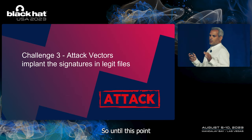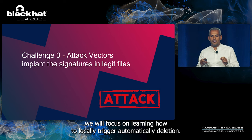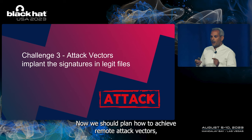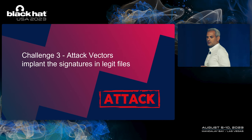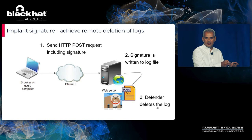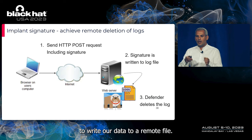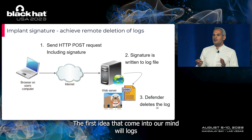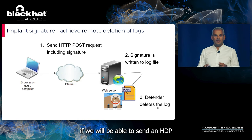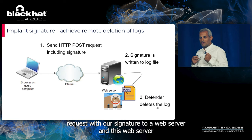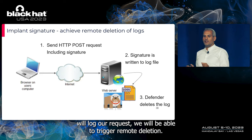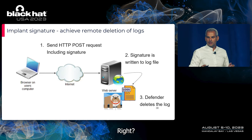Up to this point we focused on learning how to locally trigger automatic deletion. Now we needed to plan remote attack vectors. We need a way to make a privileged service write our data to a remote file. The first idea that came to mind was logs: if we can send an HTTP request containing our signature to a web server, and the web server logs our request, we would be able to trigger remote deletion of the Defender-protected log on that web server.